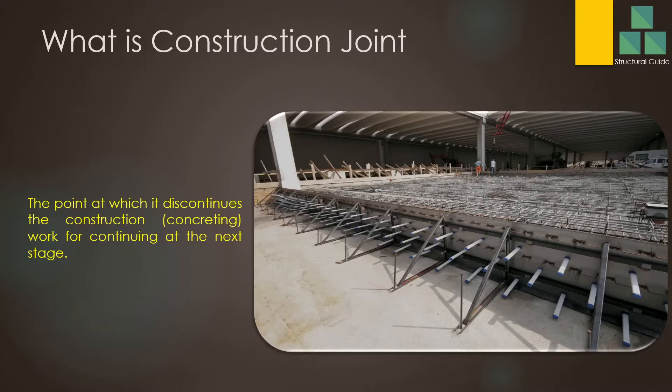There may be different definitions for the construction joint, but when we need to stop the construction, we provide the construction joint. Sometimes it becomes a construction joint automatically — for elements like columns. We may continue concreting work up to a certain level, then stop, and at the next stage continue the concreting work as a new joint. So there also will be a construction joint.